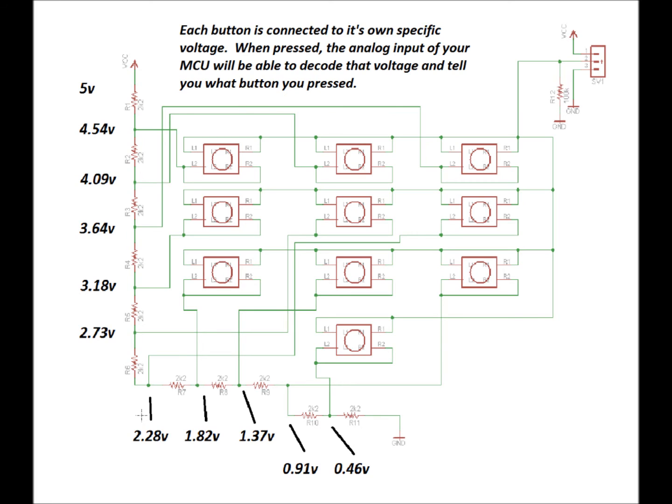You don't want it to be too high because if you have them, say, each being 100k ohms, then what's going to happen is the input of the analog to digital converter might get confused. It might not be able to read it properly because of the low current potential.